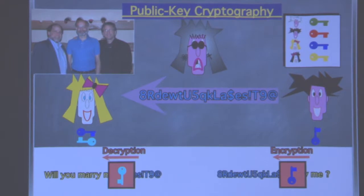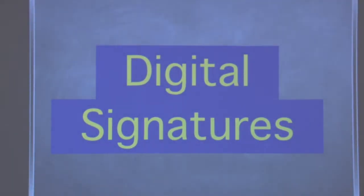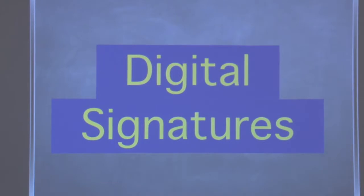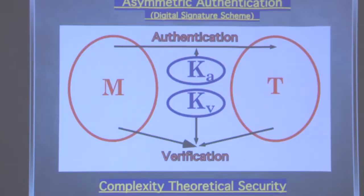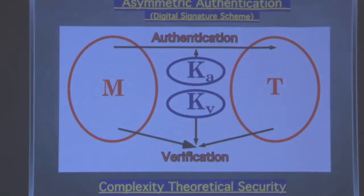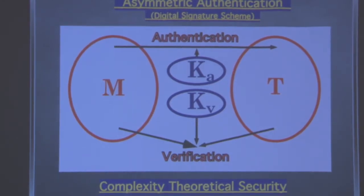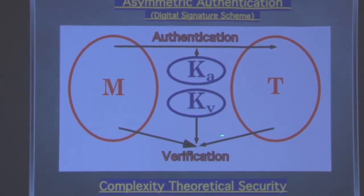Today I'm also going to talk about signature schemes — digital signature schemes. This is the second most popular topic in cryptography. Digital signatures are used to authenticate information. In the realm of digital signature schemes, you have messages and you wish to add something to the message so that the message together with its tag can be verified to be authentic to the person who created it.